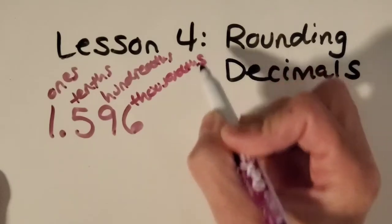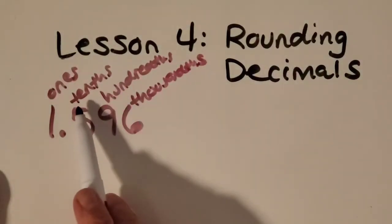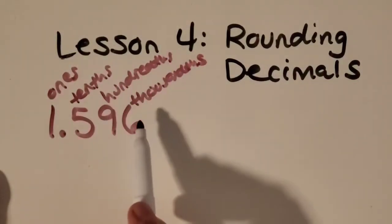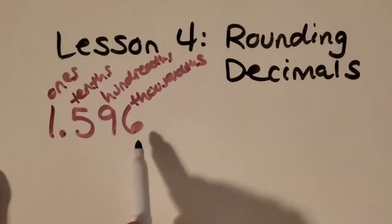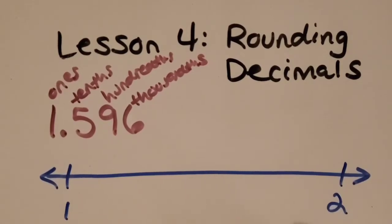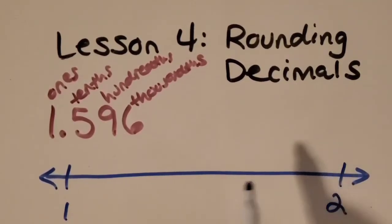I always like to do that chant to remember tenths, hundredths, thousandths, tenths, hundredths, thousandths. And I want to make sure that we have a good understanding of where decimals fall on a number line. This can really help us with our rounding if we know a little bit about what is between whole numbers.